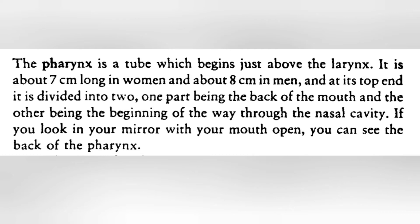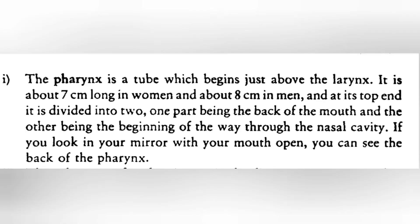Also shown are the alveolar ridge, hard palate, soft palate, pharynx, and larynx. The pharynx is a tube which begins just above the larynx. It is about seven centimeters long in women and about eight centimeters long in men. It divides into two parts — one part leading to the back of the mouth, and the other part leading to the nasal cavity. If you look in your mirror with your mouth open, you can see the back of the pharynx.